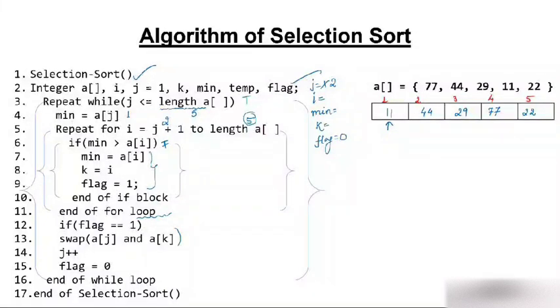Is 6 less than 5? No — condition is false and the while loop terminates. The final sorted array is 11, 22, 29, 44, and 77. This is how selection sort works, and you can see how the selection sort takes place with each element being placed in its correct position.